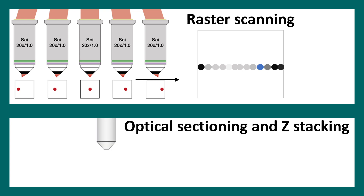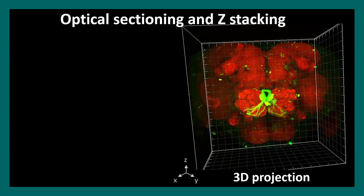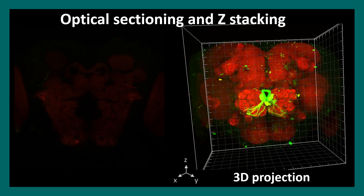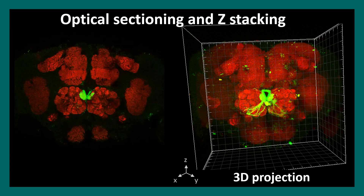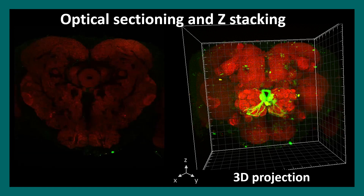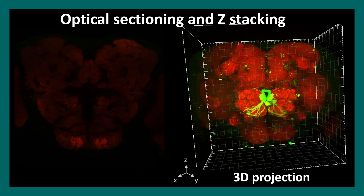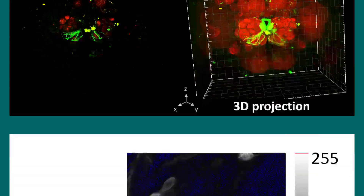Another key feature of confocal is optical sectioning — it captures images from one plane at a time, then combines all the plane images into a composite 3D image. For example, a 3D projection of a fly brain is shown: browsing through the z-stack from lower to higher planes shows individual images that may not be very informative alone, but together the overall 3D structure is clearly highlighted. This is one of the biggest advantages of confocal microscopy.